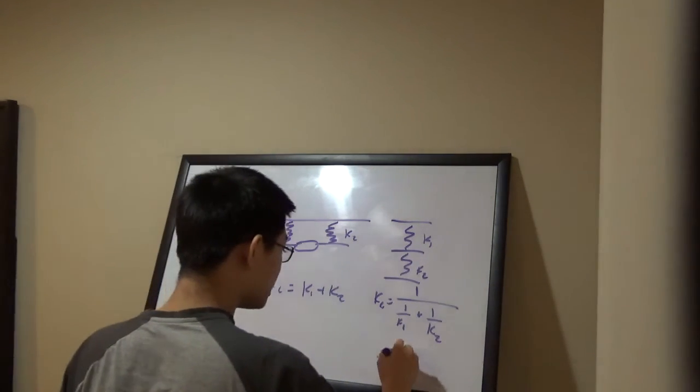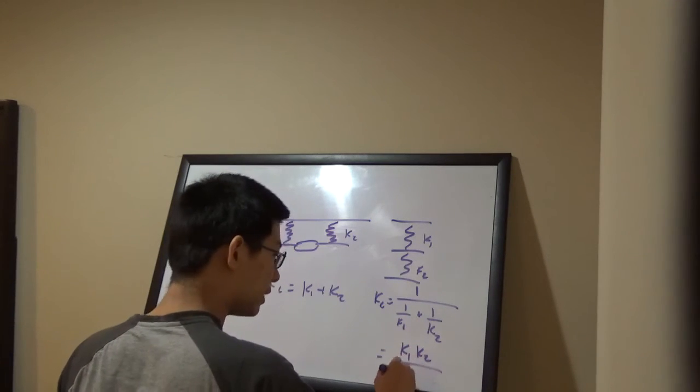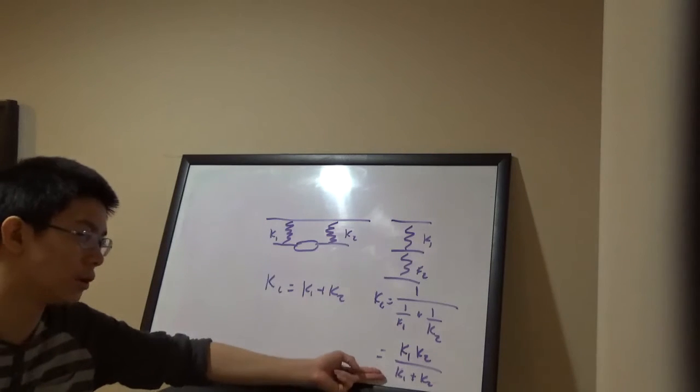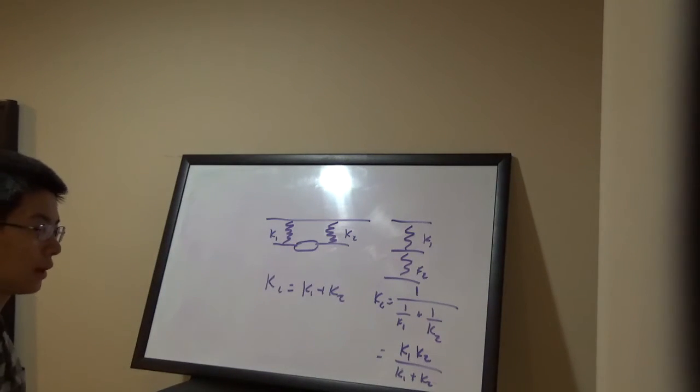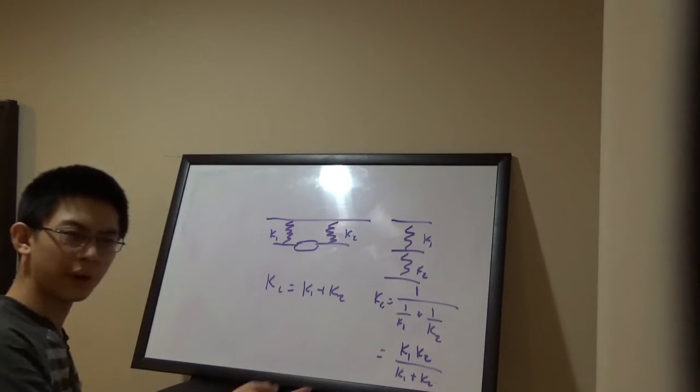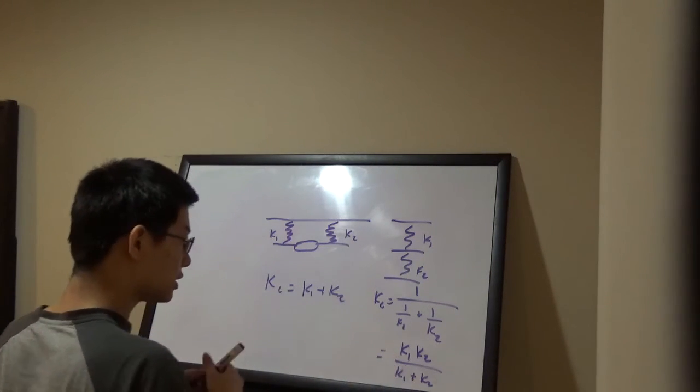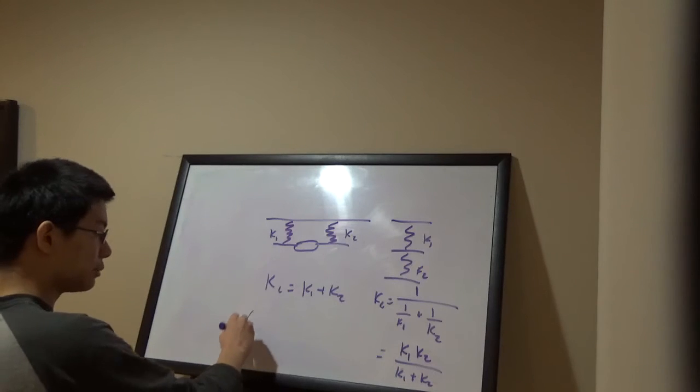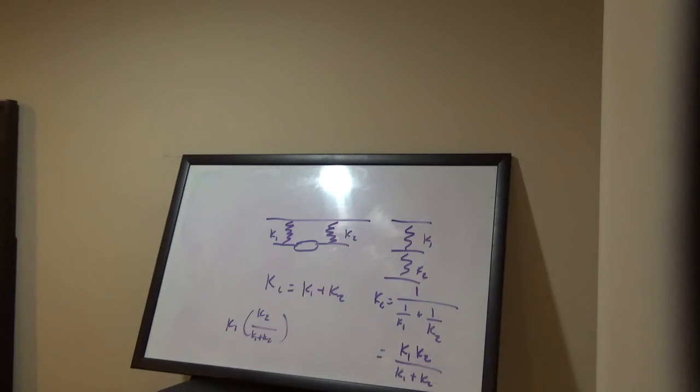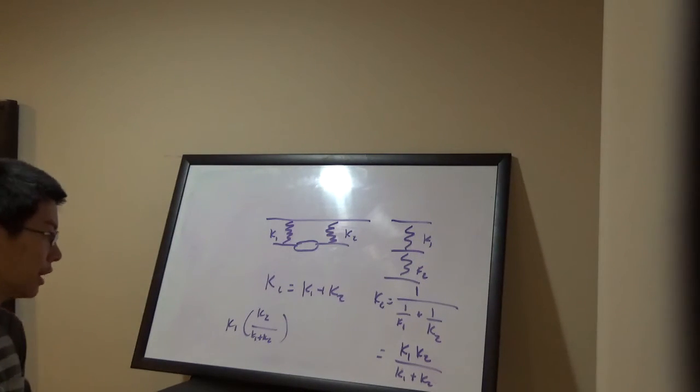A way to remember that if we combine in series, we get this equation, is that we just have to realize this is always going to be smaller than k1 or k2. Why is this going to be smaller? This is equal to k1 times k2 over k1 plus k2. Clearly, k1 plus k2, since they're both non-zero, is greater than k2. So this is going to be a fraction that's less than 1, so it's going to be a fraction of k1, so it's less than k1. We can do the same thing with k2 to show it's less. So it's going to be smaller than both of them individually.